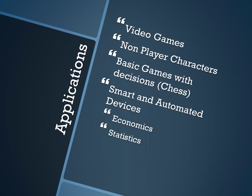Some applications of decision theory involve video games. If you play the latest Call of Duty, the game's artificial intelligence has a lot of decision making and is very smart in that regard. Also, non-player characters in adventure games, and basic games with decisions such as chess, checkers, Go, and backgammon, all involve applications of the decision tree. Smart and automated devices use it as well, along with major areas of study including economics and statistics.